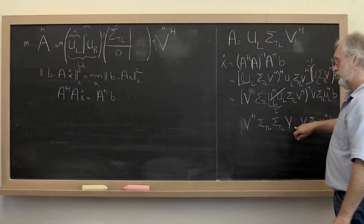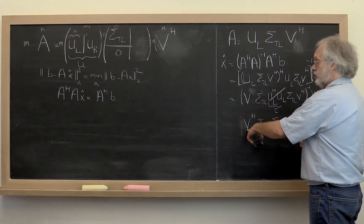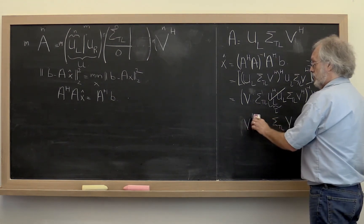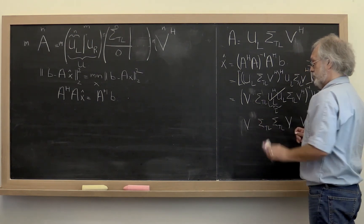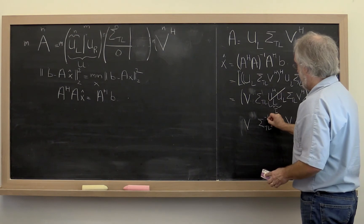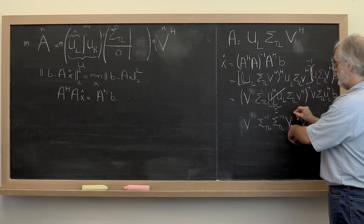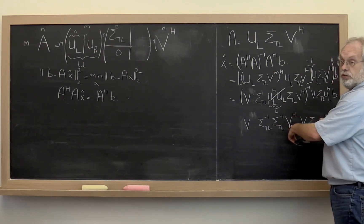We still need to take the inverse of each of these parts. The inverse of V Hermitian when V is unitary is just V. We can take the inverse of the diagonal matrices. And then we need to take the inverse of V but that just means taking its Hermitian transpose.